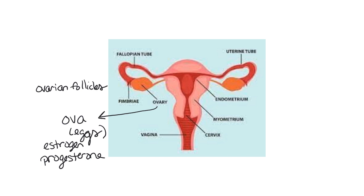These follicles are what are going to change, mature, and release an egg each month for the female. Each one of these follicles has what's called an oocyte, and an oocyte is an egg cell. So each ovary is going to be full of these ovarian follicles that contain these oocytes or egg cells that are going to mature throughout the female's lifetime and then be released on that monthly cycle.